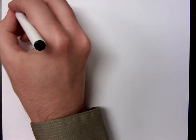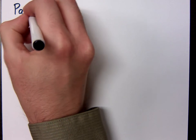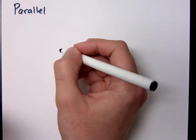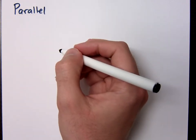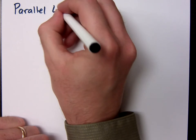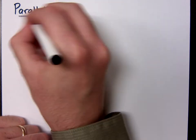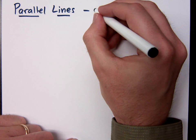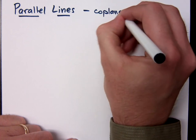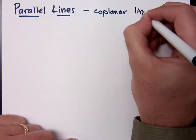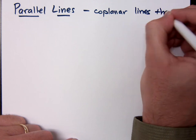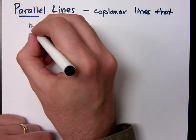Now we've already talked about this a little bit. We've talked about parallel lines. And just so that you guys can remember, these are coplanar lines, coplanar lines that never intersect.